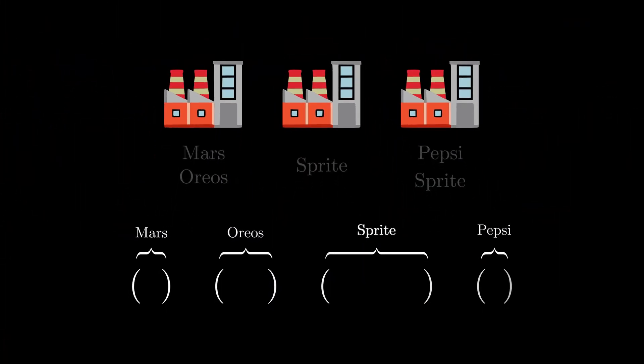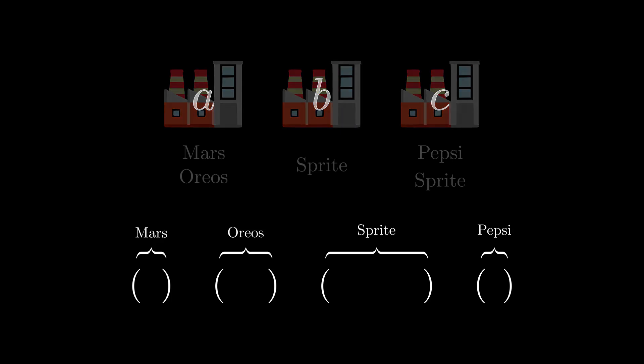Going back to the factories problem, each product will be a clause, and each factory producing it a literal. If a factory produces a single product, it will be added to the appropriate clause. If it produces two, one will be positive and one negative, since a factory can only produce one product at a time.